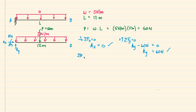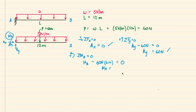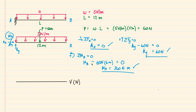For sum of moments about point A equals zero, with counterclockwise positive: we have positive Ma minus 60 newtons times the moment arm. The resultant acts at the center of the beam, which is 6 meters from A. So Ma minus 60 times 6 equals zero, giving Ma equals 360 newton-meters.